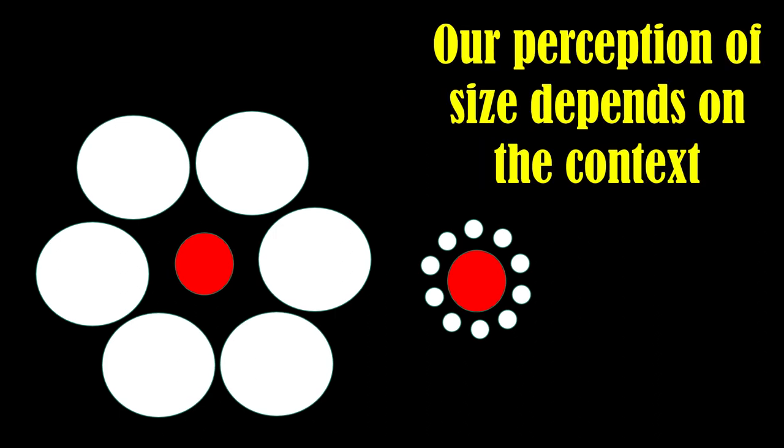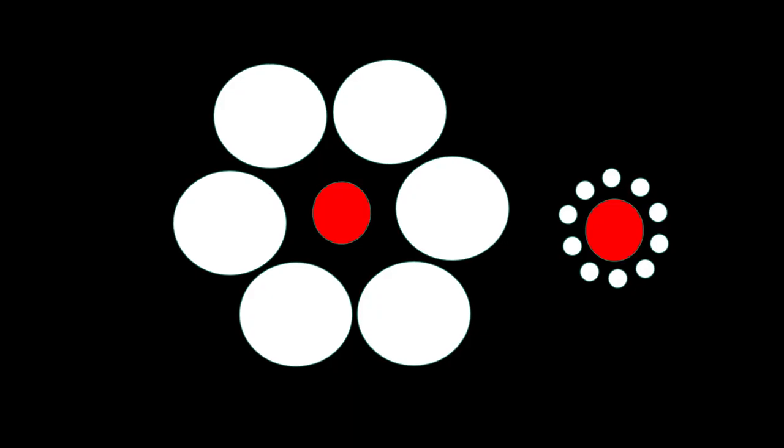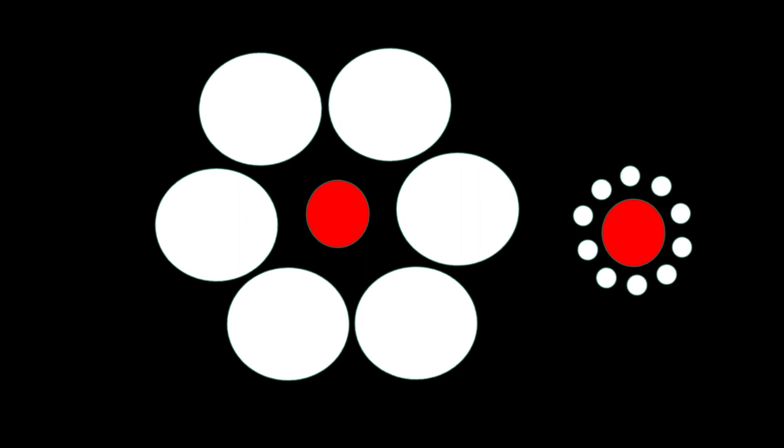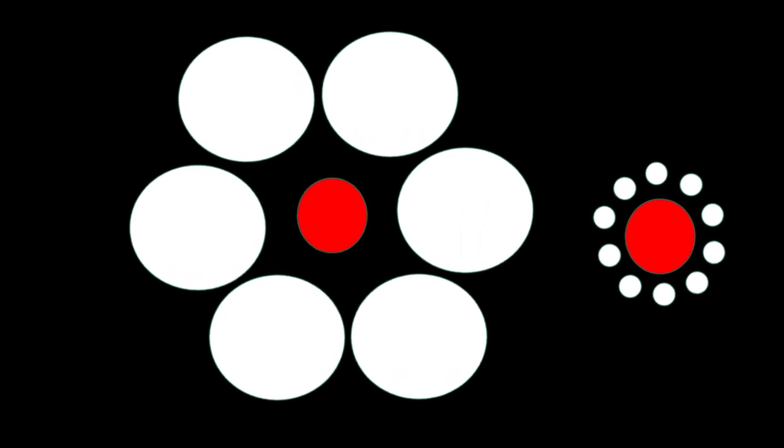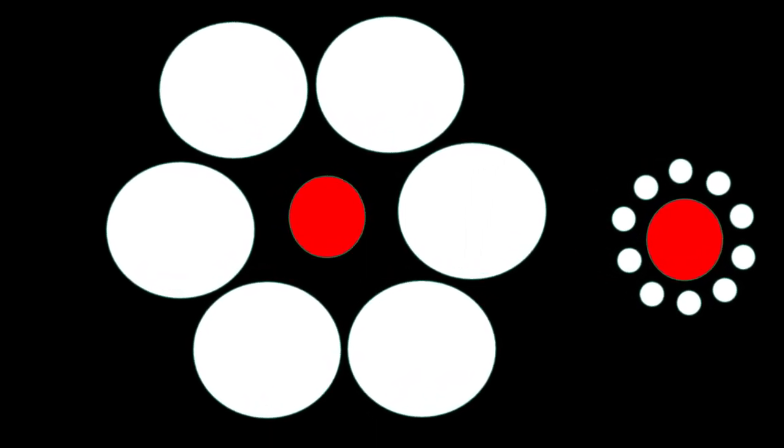Actually, our perception of size depends on the context. Our brain compares the red circles with its surrounding white circles, and is tricked into believing that the right red circle is bigger.